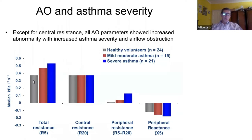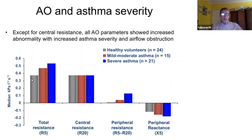As you go from normal to mild to moderate and severe, you get a proportional increase in total airway resistance. When you look at central airway resistance at 20 hertz, there was no change at all. I think this slide teaches beautifully that the most important thing in asthma — as you go from normal to mild to moderate to severe — is that this is a disease of small airways and not of large airways.